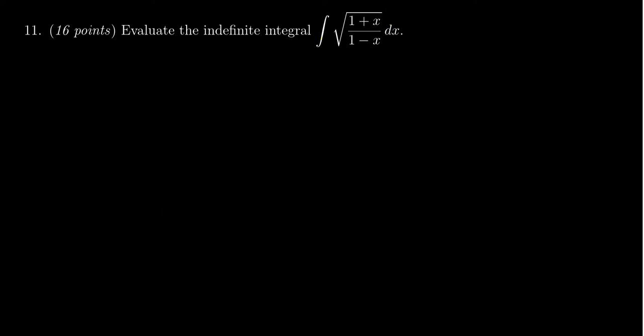The second strategy that we have for dealing with square roots typically is trigonometric substitution. Now trig subs are great when you have a sum or difference of squares inside of the square root. But I don't have that here. I have 1+x on top, 1-x on the bottom. But it turns out what we can do is if I multiply top and bottom by 1+x or 1-x, we can actually produce some squares.